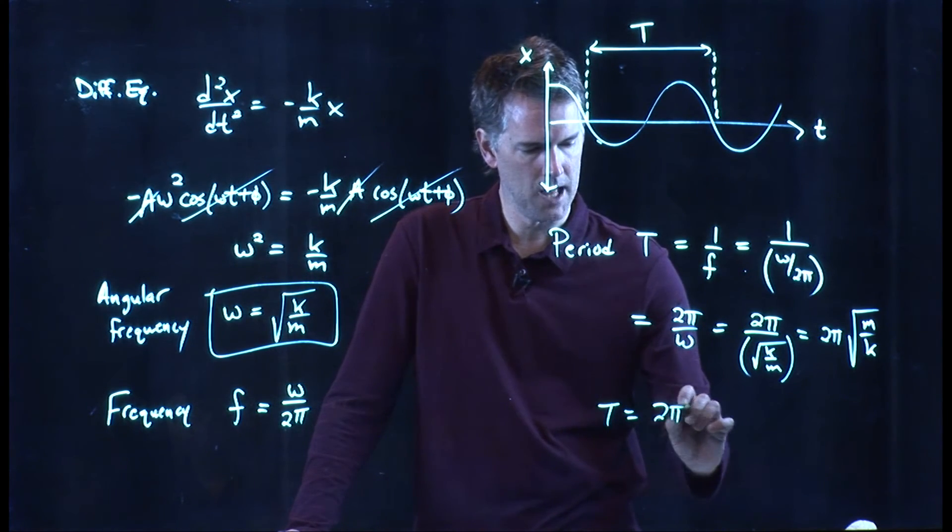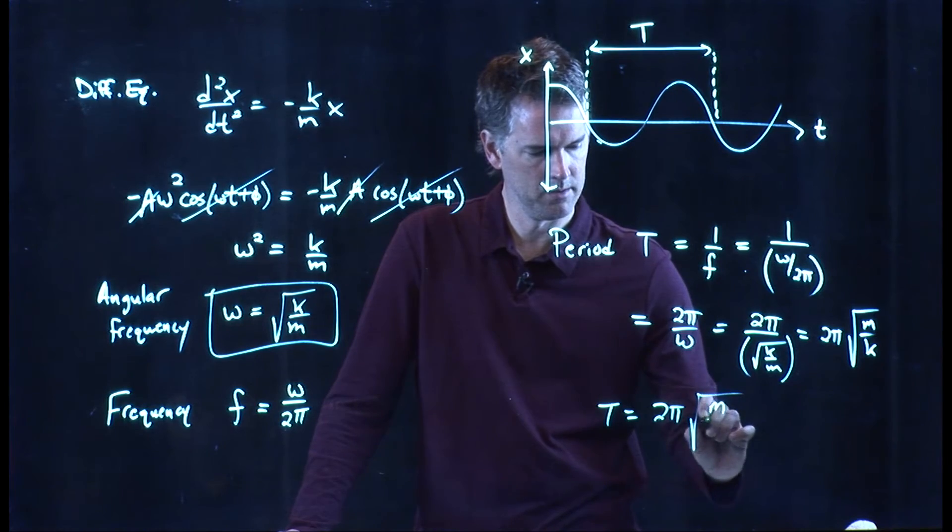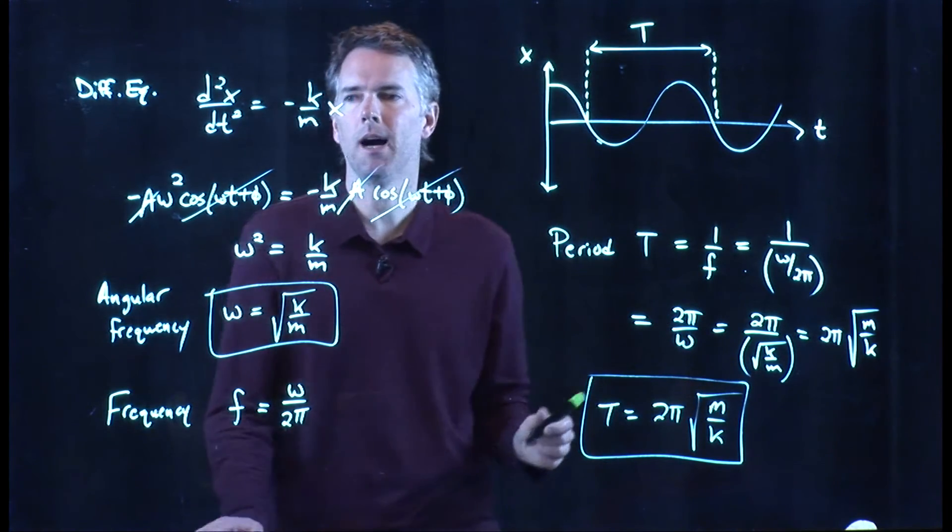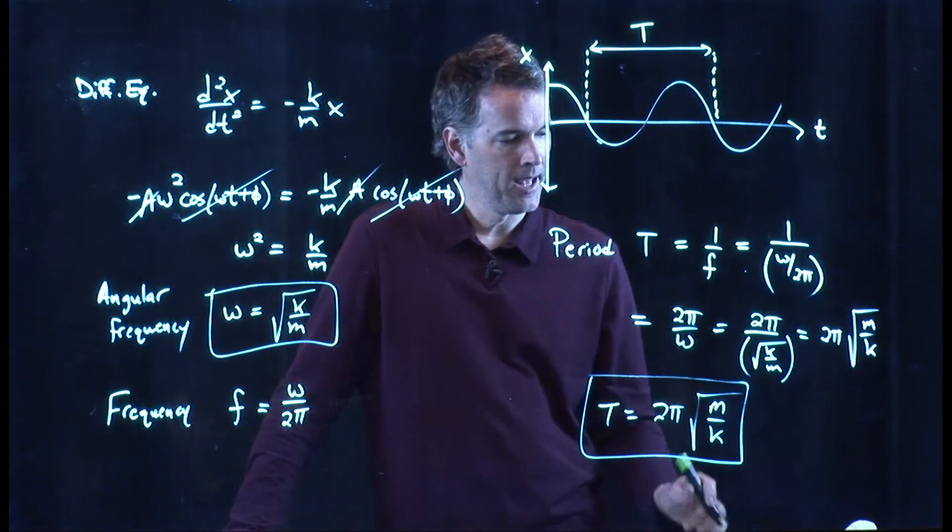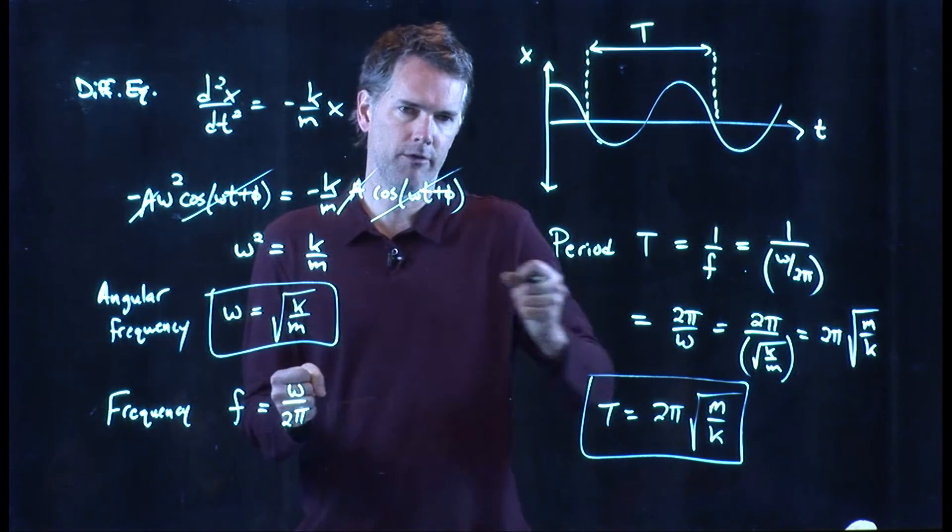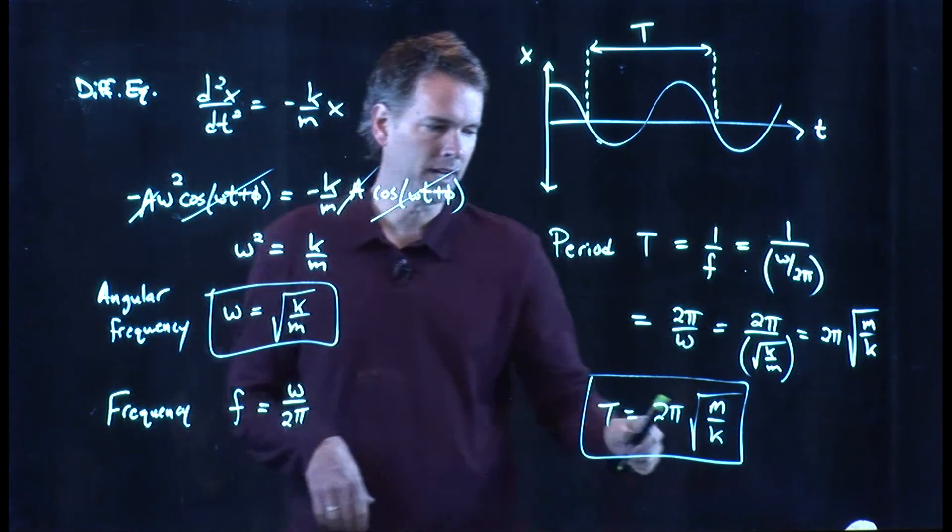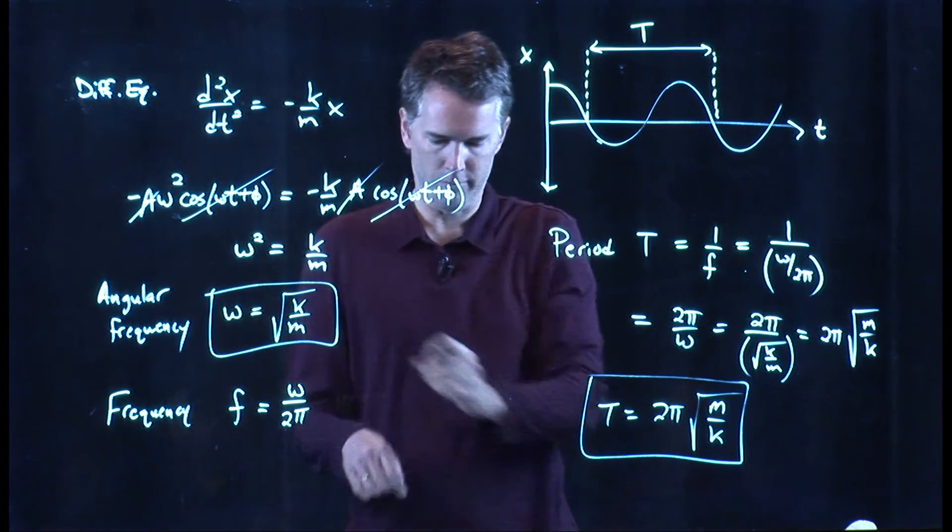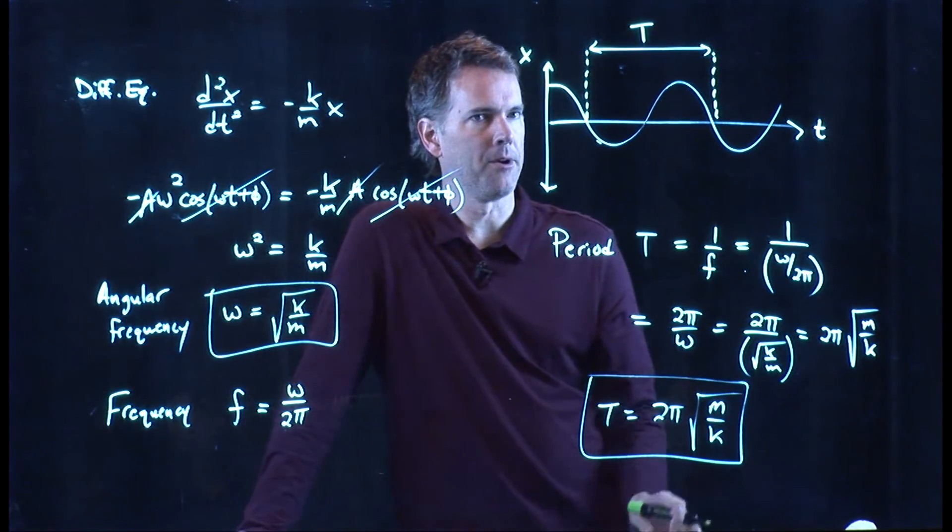So when you have a block on a spring, what's the period of that oscillation? It's that. It's two pi the square root of m over k. If I have a bigger block, it takes longer for it to go back and forth. If I have a stiffer spring, it takes shorter to go back and forth. So that's the period.